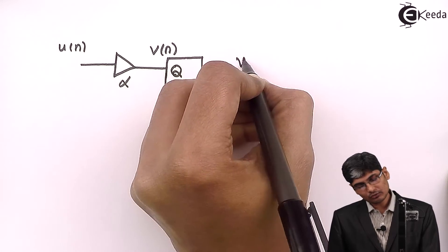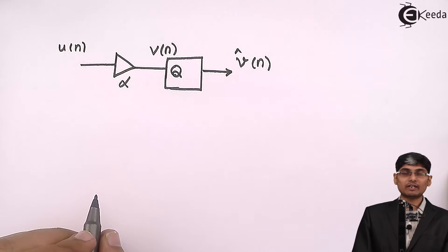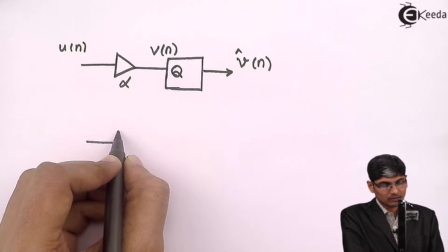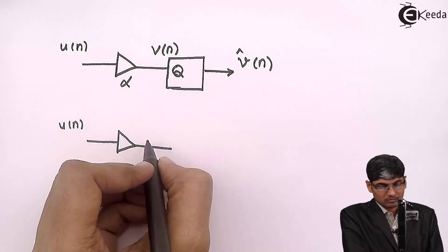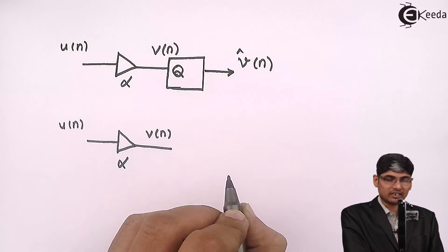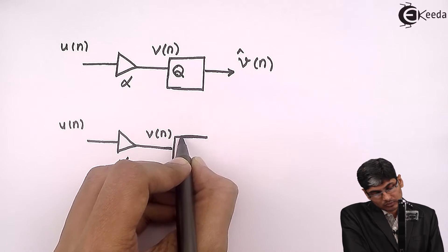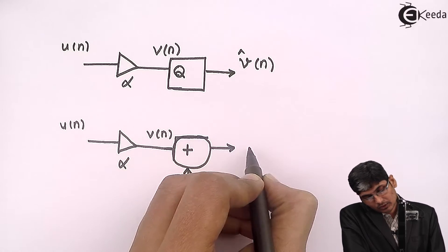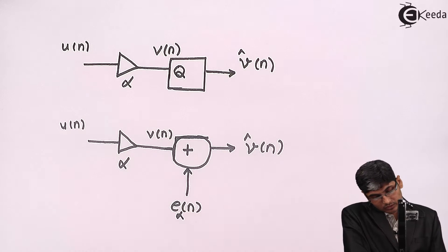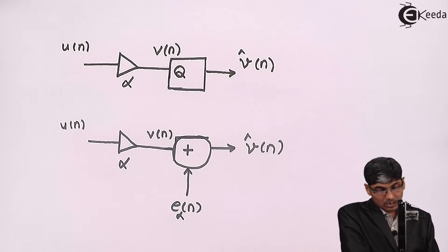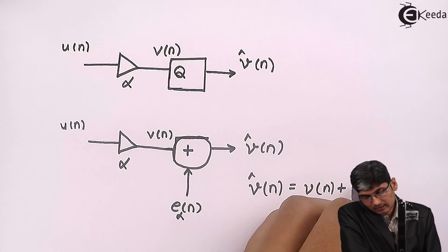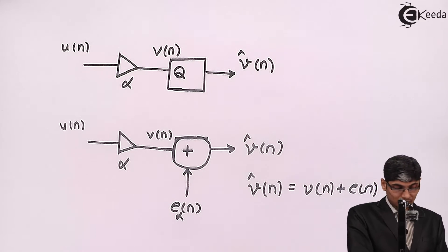After rounding, we get a new value called v-cap(n), which will not be the same as v(n). Using the statistical model of Q, we model this as an idealized multiplier whose output is v(n) with infinite precision, followed by an adder to which the input is e(n) — the error. The output of this adder is v-cap(n). From this we can write: v-cap(n) = v(n) + e(n), where e(n) is the error due to finite precision.